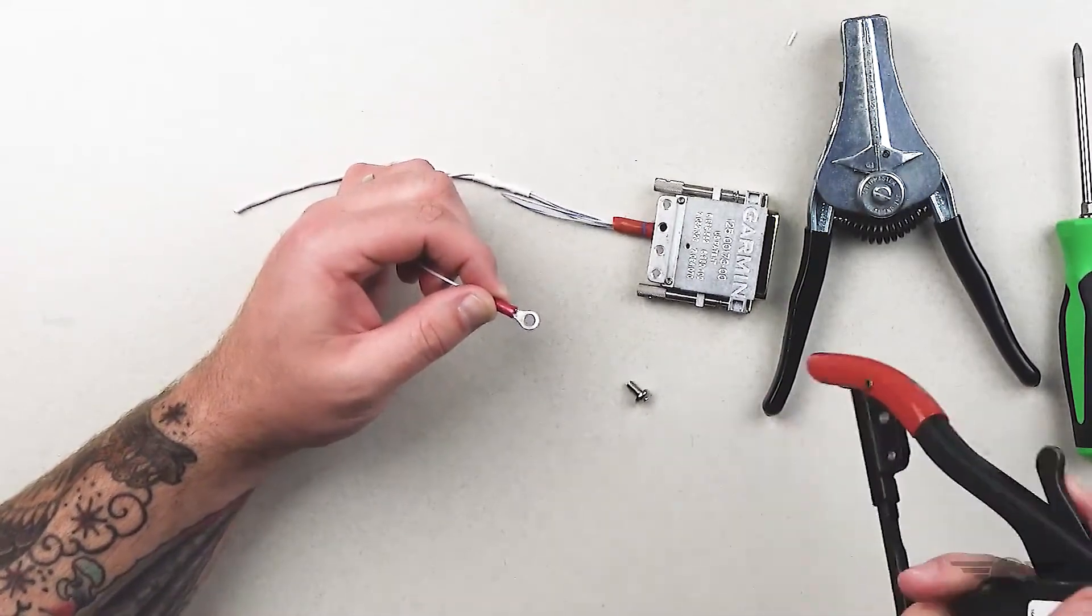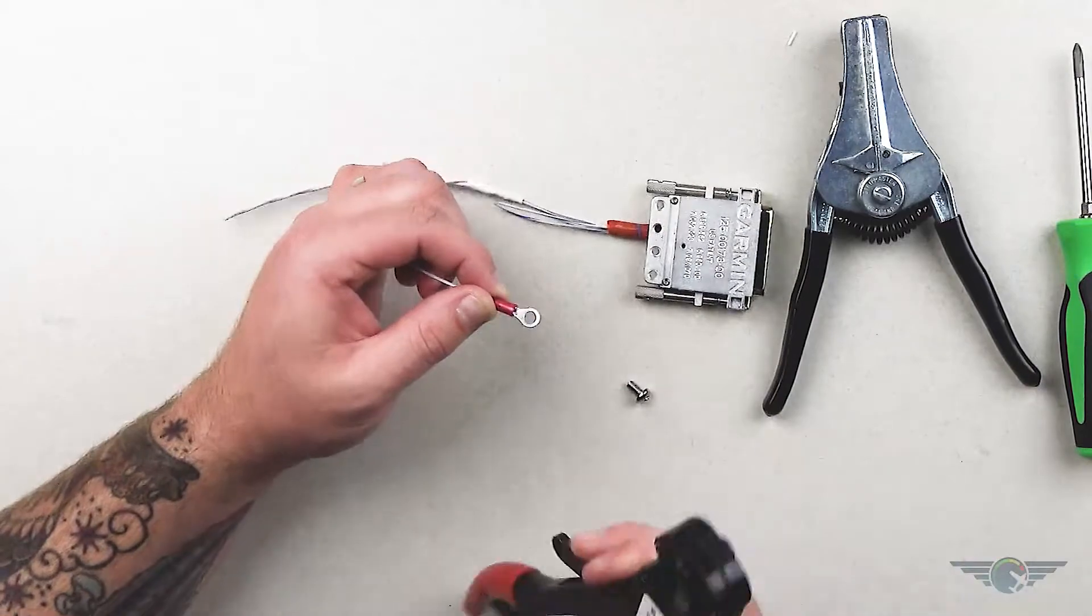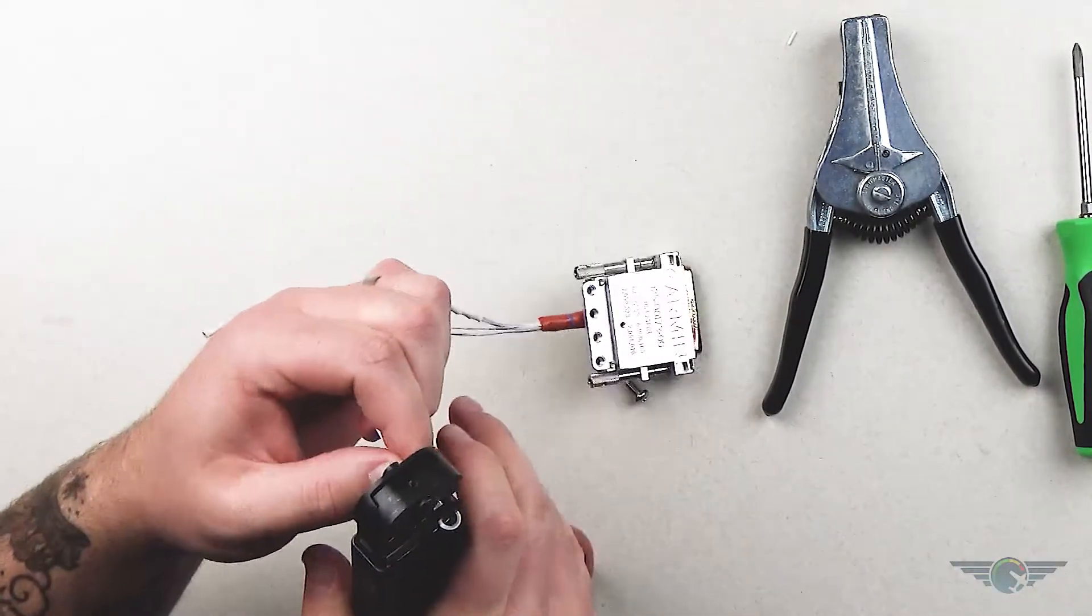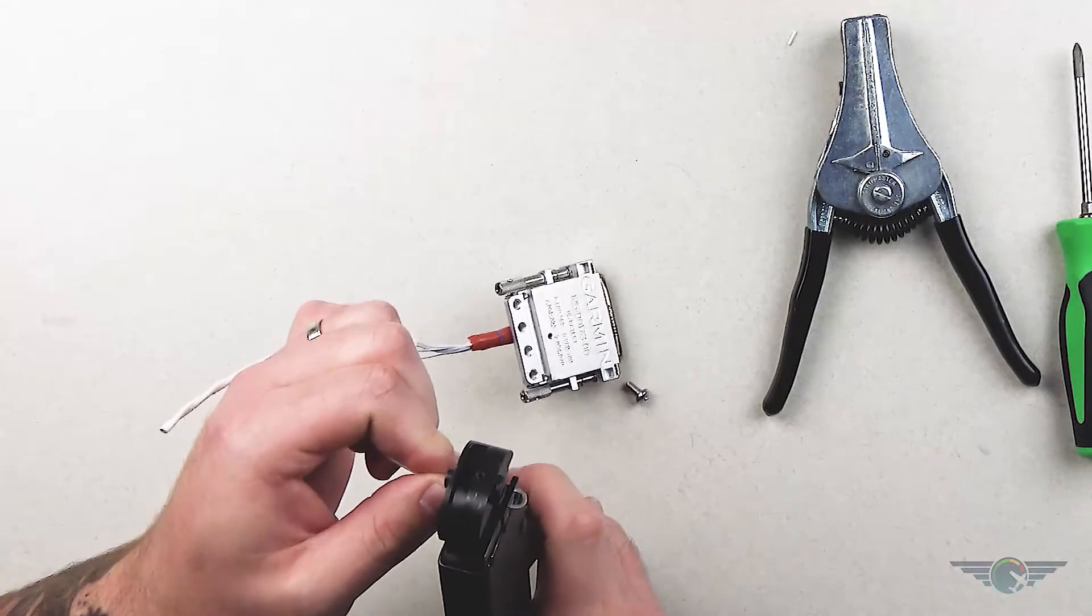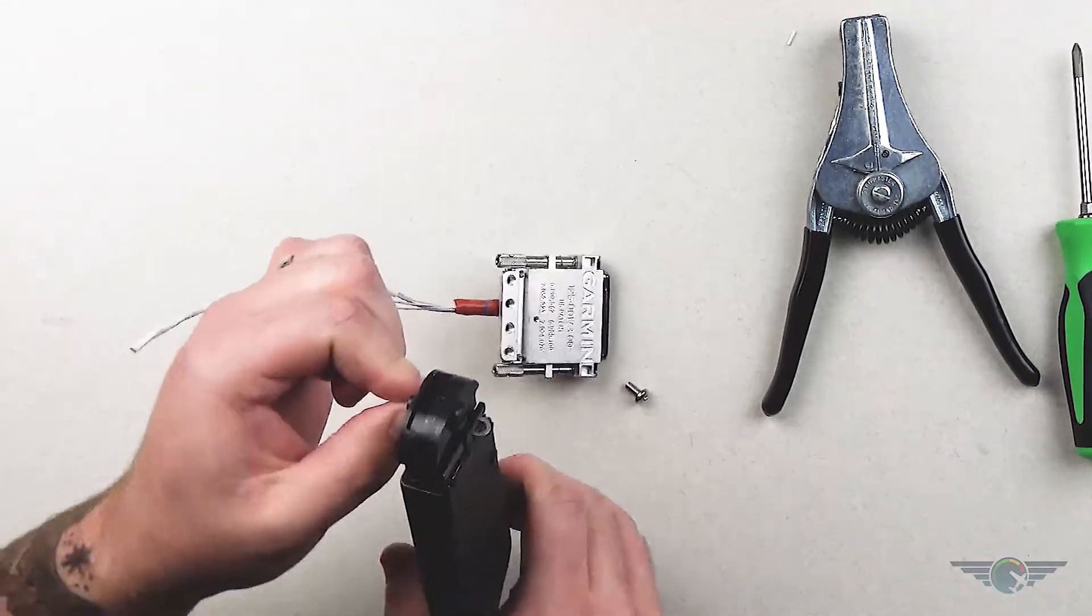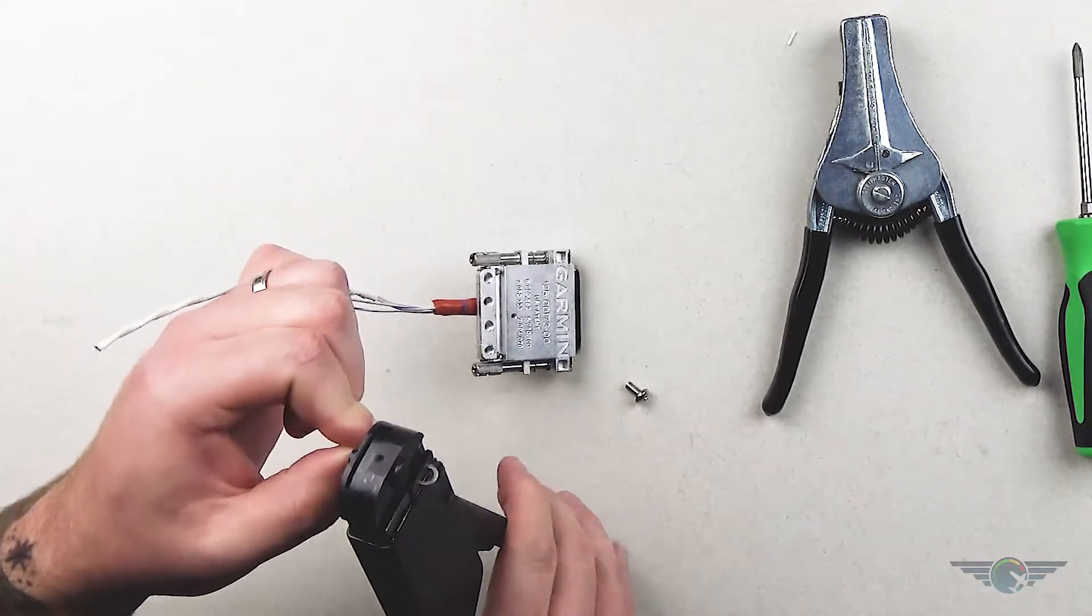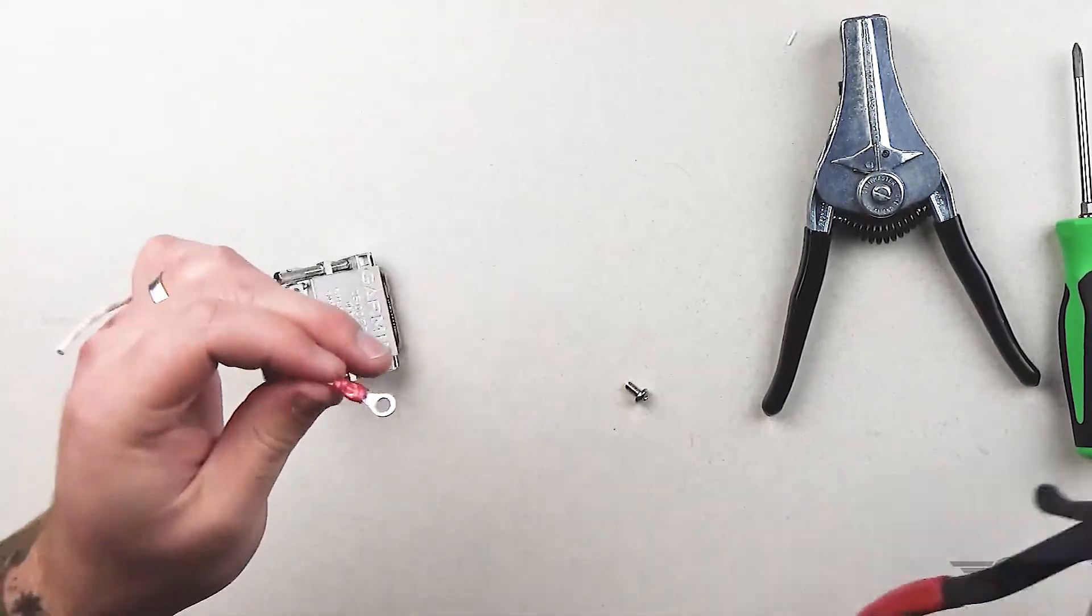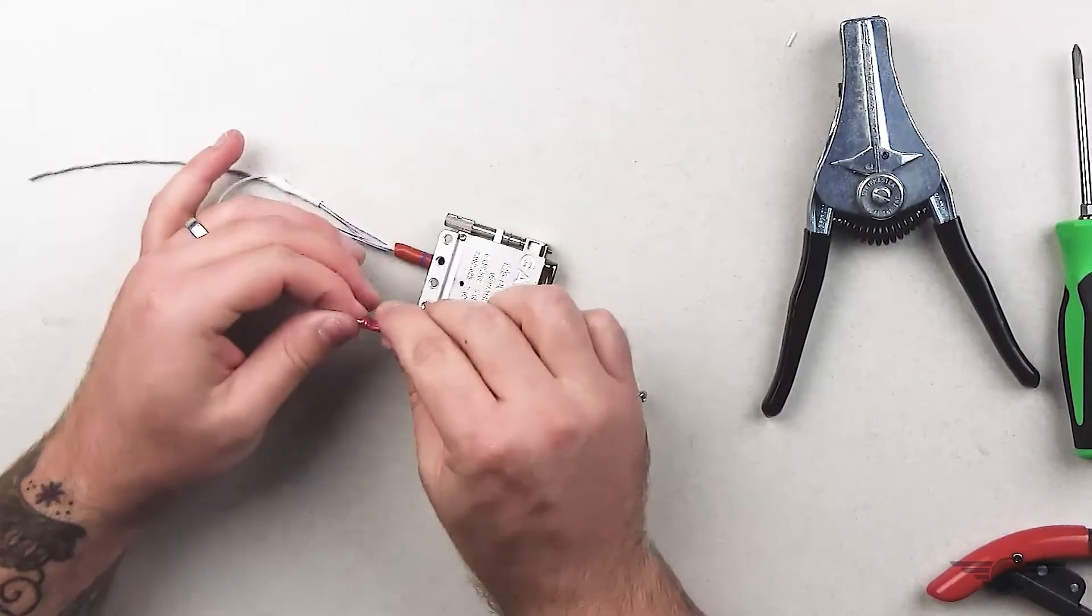So I'm going to take my red ring terminal, so I'm going to go to the red side. Ring terminal goes in. And there it's crimped. So I've got a good mechanical connection there.